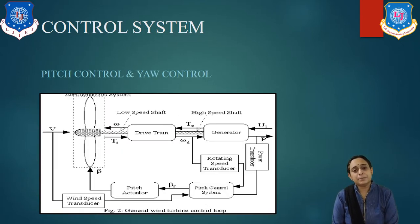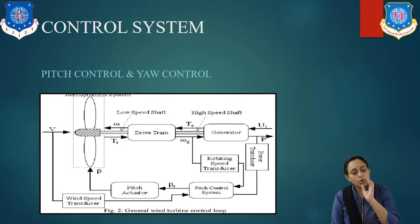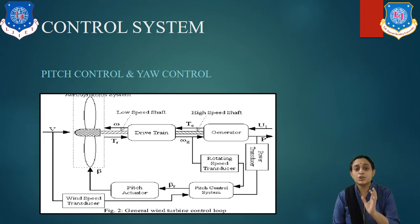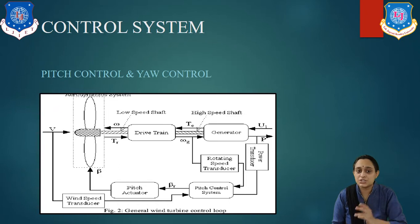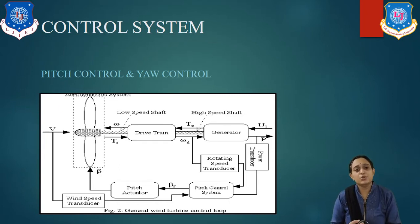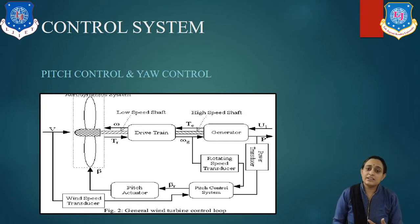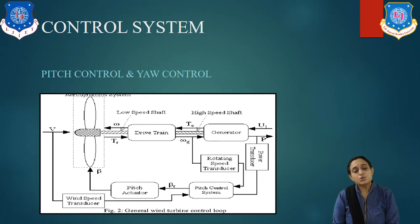Let us understand the pitch control or control system. It automatically changes the rotor blade angle and controls rotor RPM. The blades are provided with hydraulic pitch control. The pitch angle can be controlled in a wide range of 0 to 30 degrees to obtain the desired power velocity.